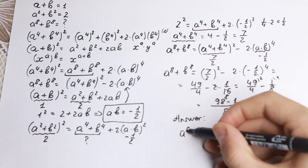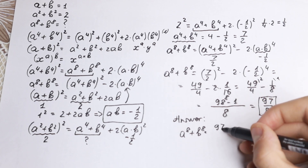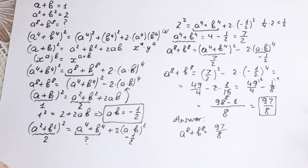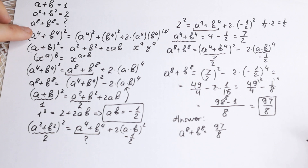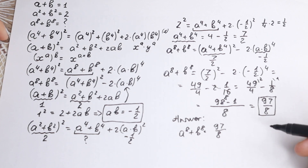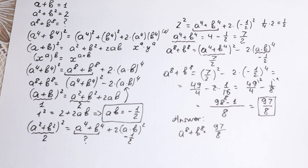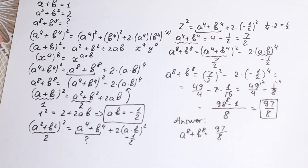So the answer is a to the eighth plus b to the eighth equals 97/8 — not 8 as many students incorrectly think. As you can see, this requires a long and multi-step solution. I hope you understand this explanation. If you still have any questions, write them in the comments and I'll try to help everyone. Thank you so much for watching and subscribing — I really appreciate it. See you in the next video, have a great day!